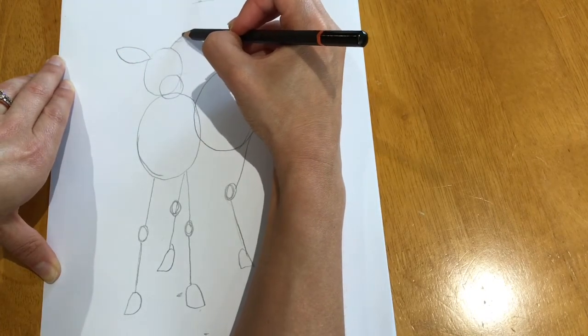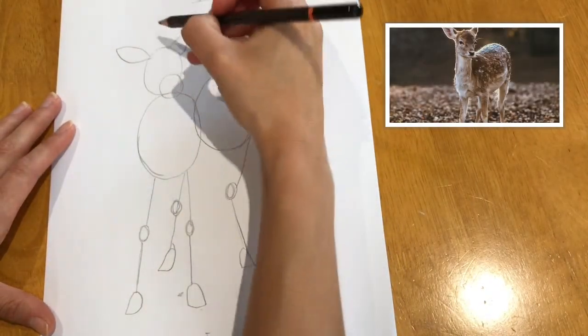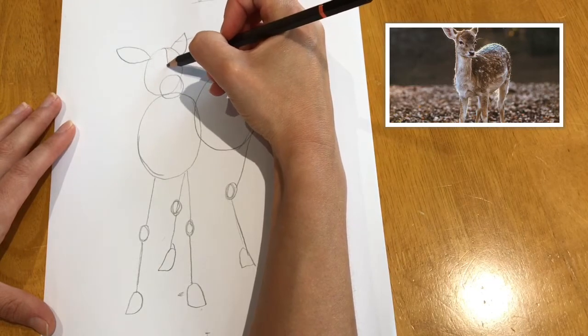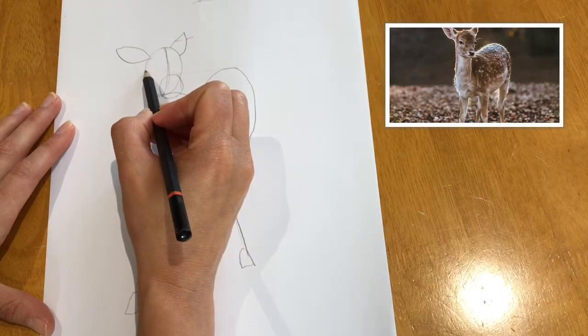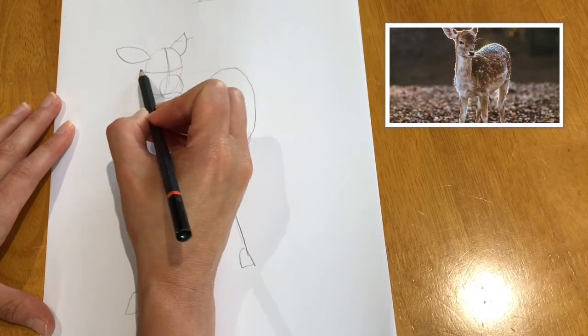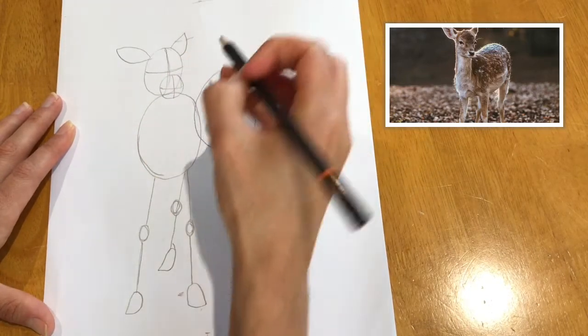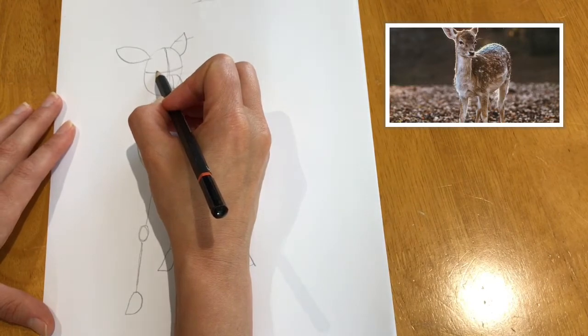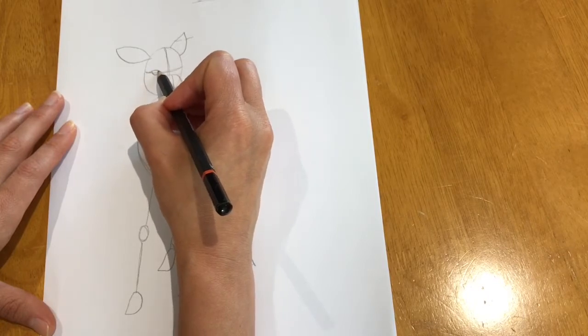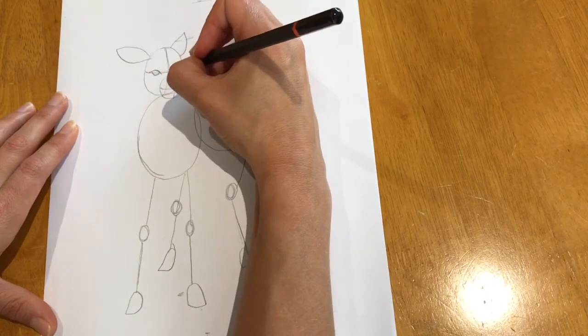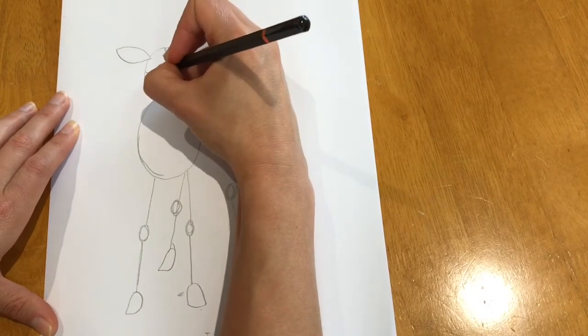Now we're going to be adding the detail of the fawn's face. So if you draw a line coming down slightly curved round like that and then one halfway across this oval slightly curved again like this. And the same with this circle here. So on this line we're going to be drawing the fawn's eye. And they've got rather large eyes. There's one eye. And there's the other one. We can colour them in later.